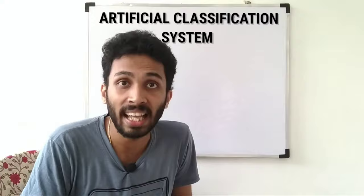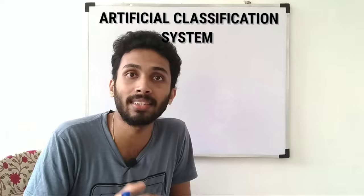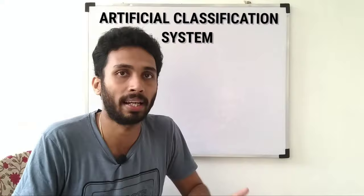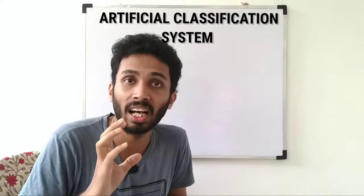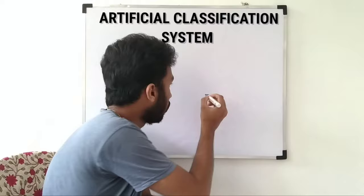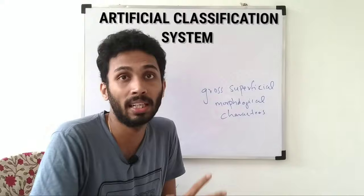Angiosperms are called flowering plants. The first classification system is the Artificial System of Classification. In this system, we use gross superficial morphological characters. Morphology is basically the external structure of plants.